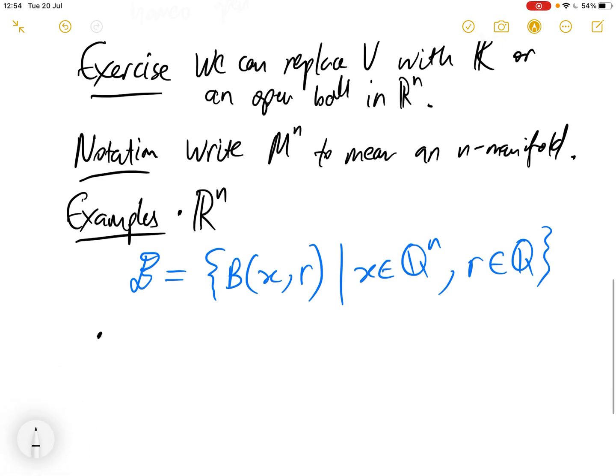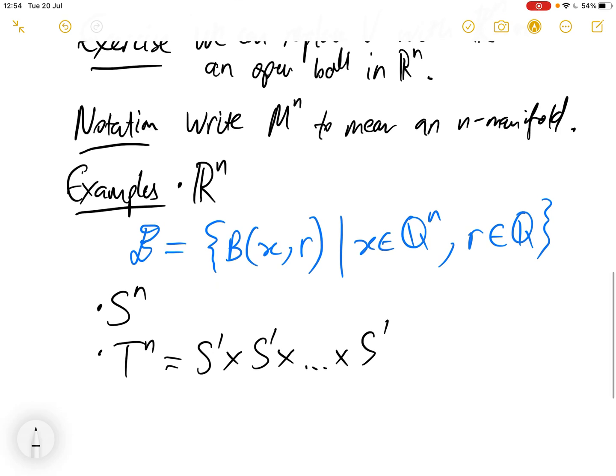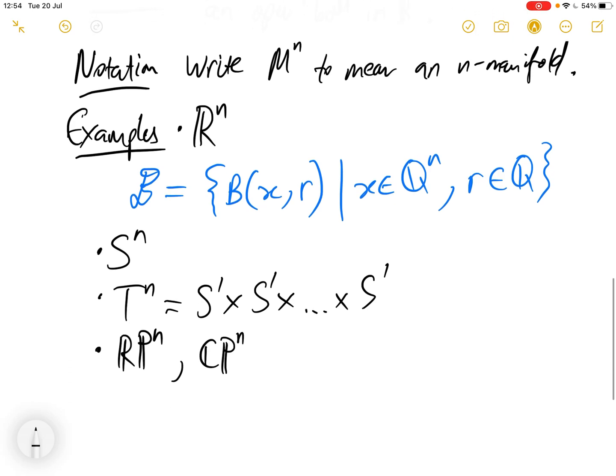Other nice examples are spheres, the n-sphere S^n, the n-torus, which is the product of S^1 with itself n times, RP^n, CP^n, which will be defined in later videos. So those are just a few simple examples.